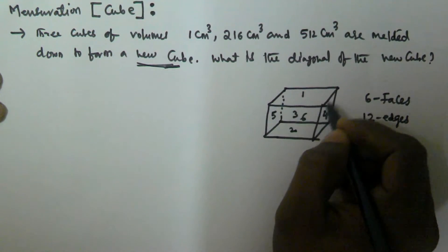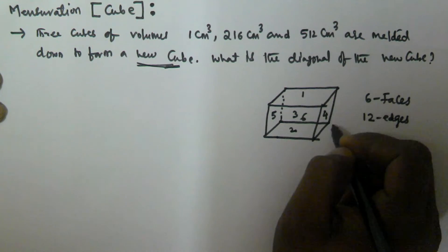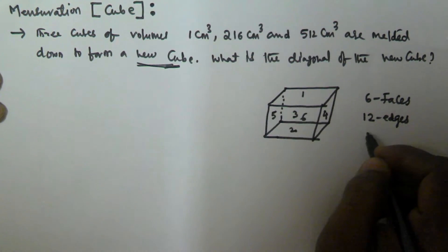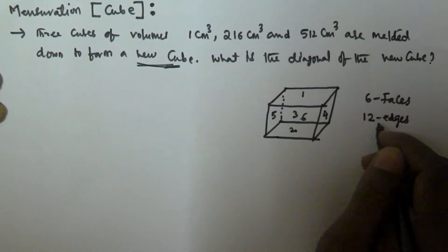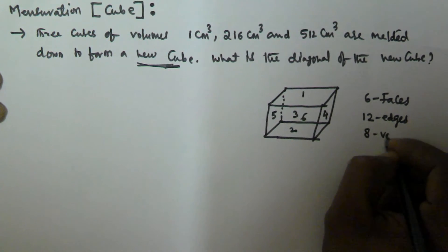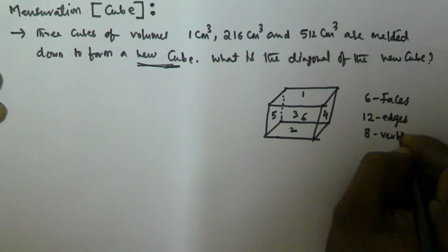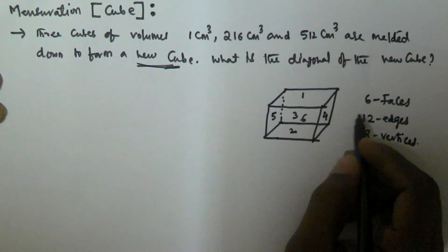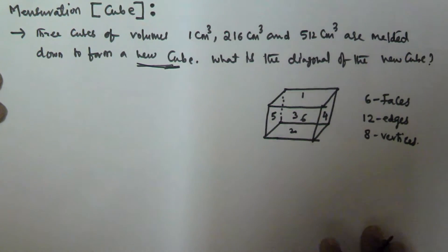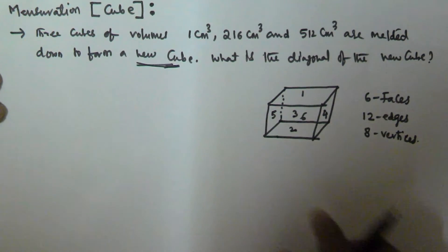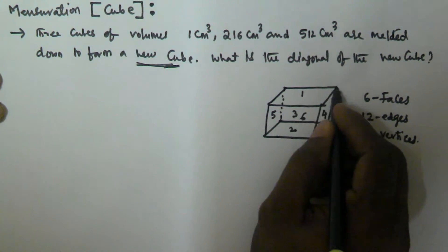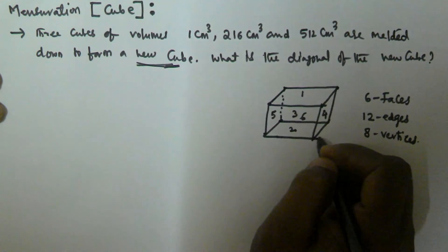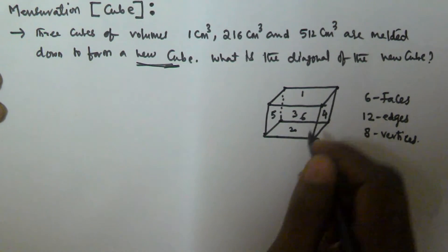Counting the edges: 1, 2, 3, 4, 5, 6, 7, 8, 9, 10, 11, 12 — so 12 edges are there. And the vertices: 1, 2, 3, 4, 5, 6, 7, 8 — so 8 vertices are there. A cuboid consists of 6 faces, 12 edges, and 8 vertices.